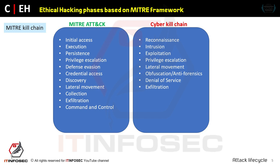The Cyber Kill Chain has seven steps that enrich an analyst's understanding of an adversary's tactics, techniques, and procedures. The MITRE ATT&CK framework includes: initial access, execution, persistence, privilege escalation, defense evasion, credential access, discovery, lateral movement, collection, exfiltration, and command and control (C2). The Cyber Kill Chain contains seven steps: reconnaissance, intrusion, exploitation, privilege escalation, lateral movement, obfuscation/anti-forensics, denial of service, and exfiltration.